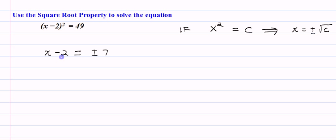We don't have x by itself, so what we have to do is add 2 to both sides of this equation, which would give us x is equal to, well, it's going to be 2 plus or minus 7.